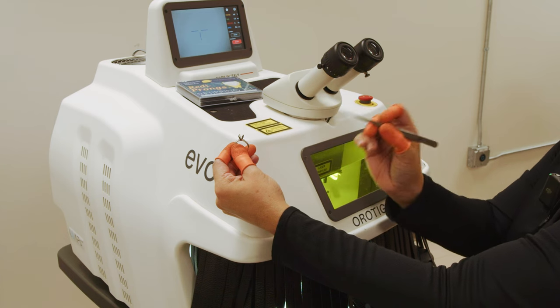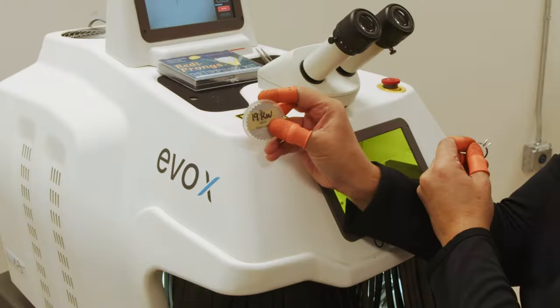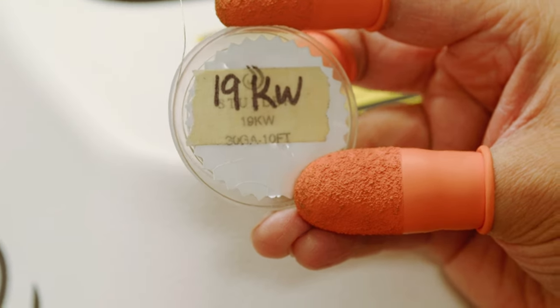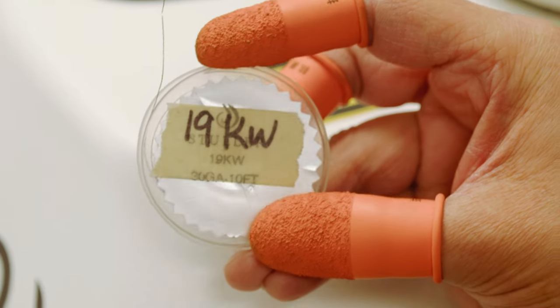Today we are going to retip this prong. We're going to use 19 karat white wire, which is a higher karat metal. It's going to help prevent pitting and porosity.